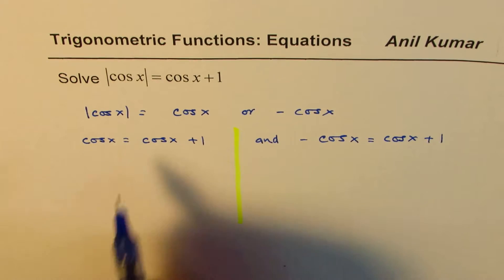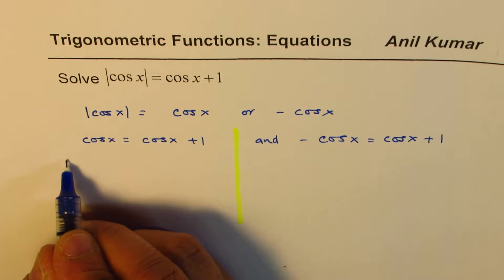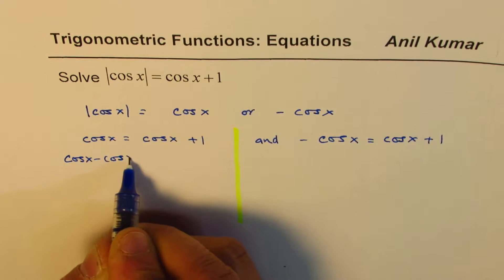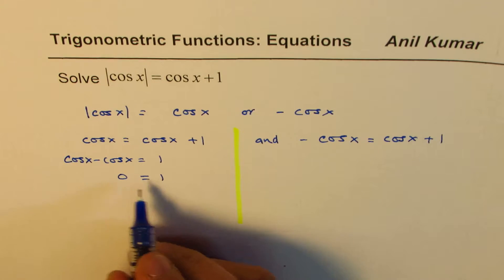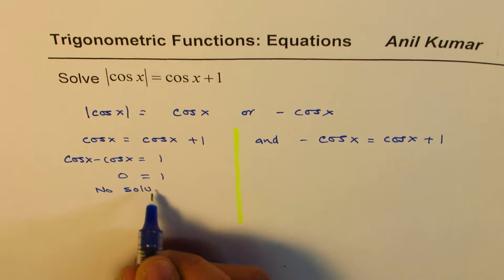The one on the left, we will bring cos x to this side. We get cos x minus cos x equals 1, which is 0 equals 1. Well, that is not possible, so there is no solution for this part.